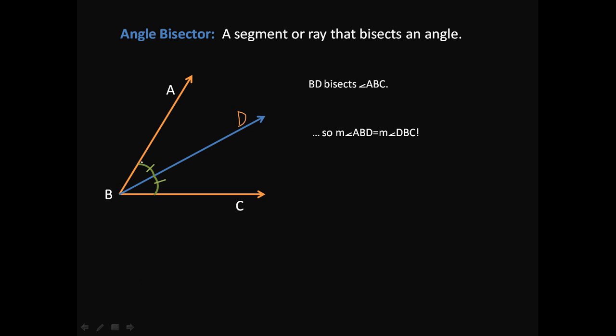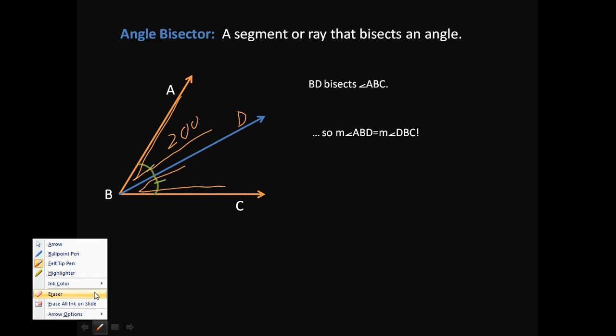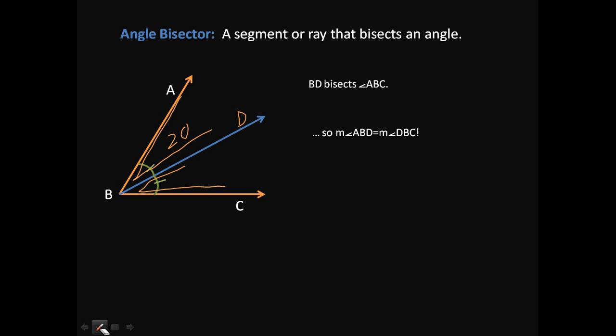And we can show that by these little arc things. So we have an arc here. And that means that this angle ABD, so this right here, is equal to the measure of this right here. So if we were to put some numbers with that and say this is 20 degrees, then that means this over here must also be 20 degrees. So just like we can bisect a line with a segment or ray, we can also do the same thing to an angle. Let's take a look at some examples of that. So what an angle bisector makes is two equal angles.